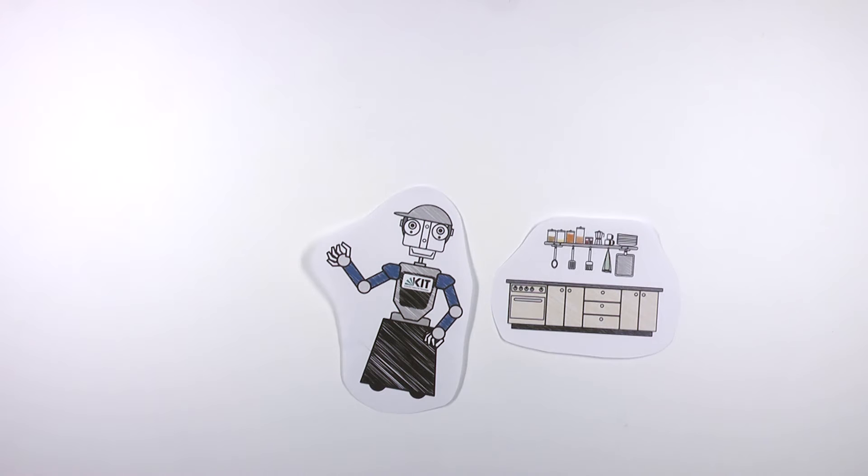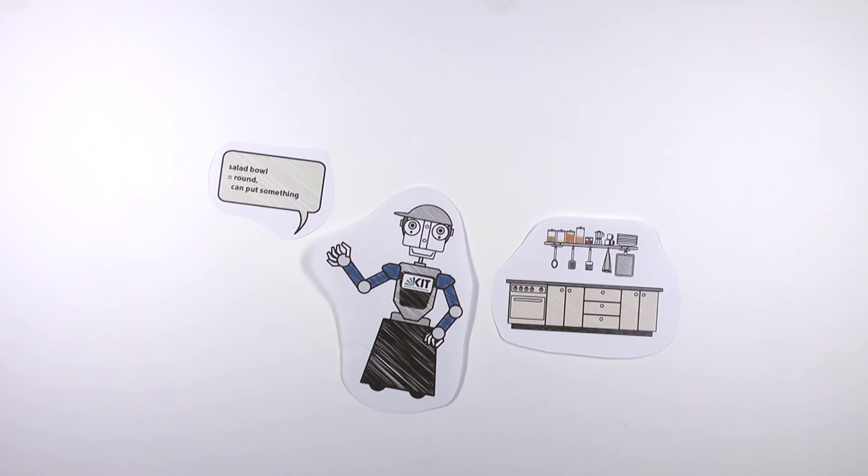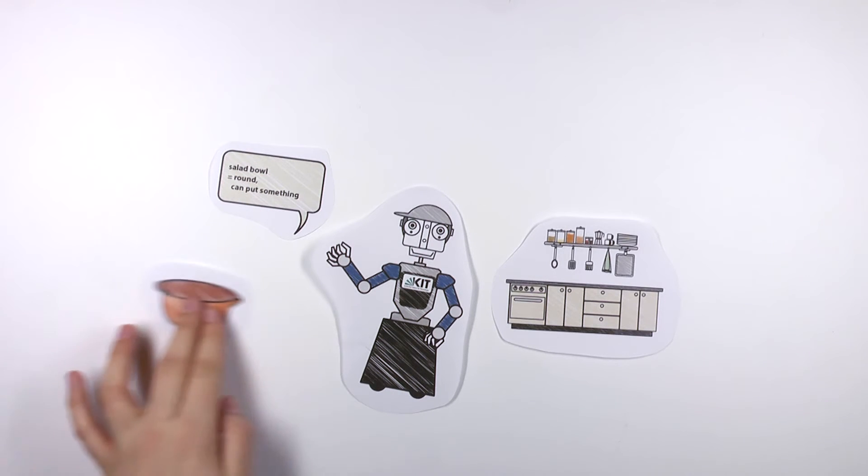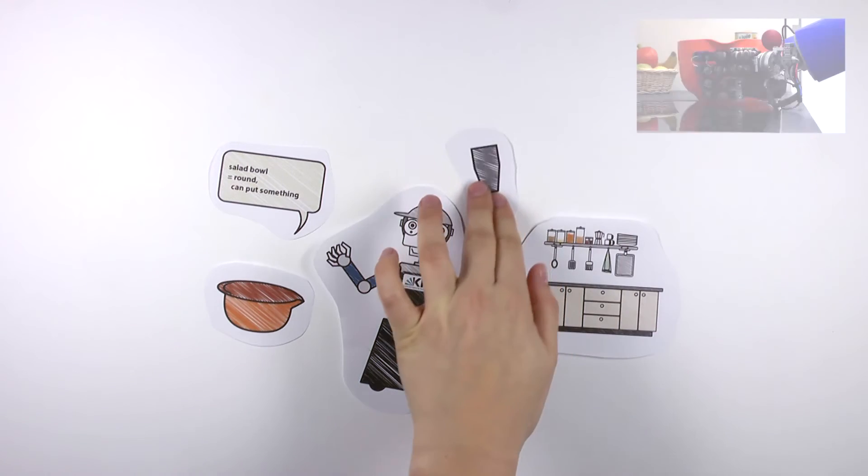But it has already learned that a bowl is something round, into which something can be put. Ama looks for a suitable object and sees the mixing bowl.